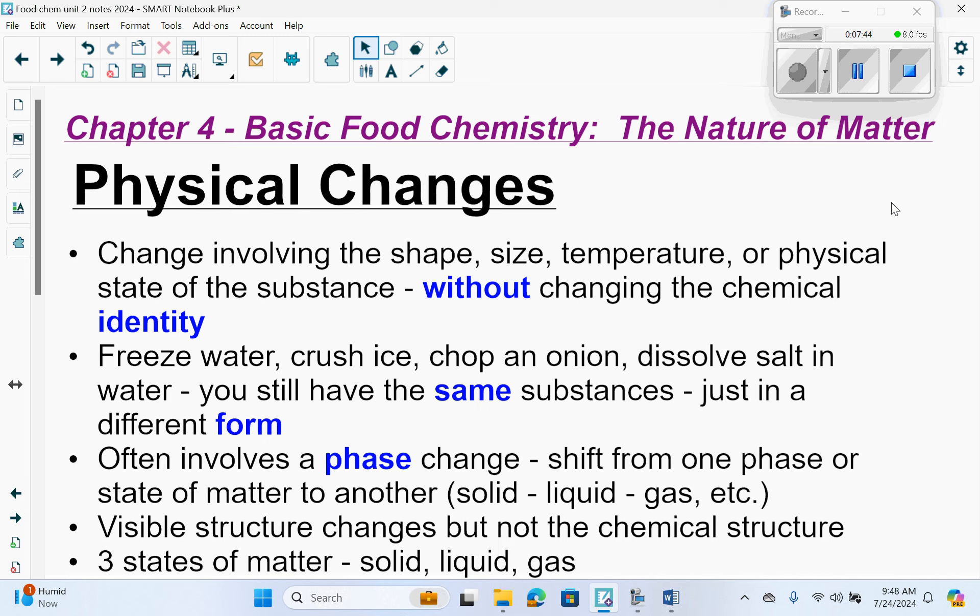A physical change is a change involving the shape, size, temperature, or physical state of the substance, like solid liquid gas, without changing the chemical identity. When you freeze water to make ice cubes, you still have water, just as solids now. If you crush ice, you just change the shape. If you chop an onion, it's still an onion in smaller pieces. If you dissolve salt in water, you still have salt and water, just dispersed or distributed. You didn't make anything new. You still have the same substances, just in a different form.